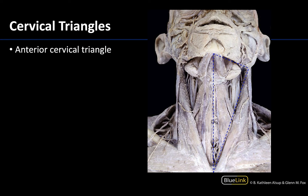The anterior cervical triangle is a fairly large area. Its medial boundary will be the midline, which is what we have right here. The superior boundary will be the base of the mandible, or the bottom of the lower jaw region. The lateral boundary will be the anterior border of the sternocleidomastoid, which is an easily palpable landmark of the neck. That gives you a good idea of where the anterior cervical triangle is; the posterior cervical triangle will be back in this region.